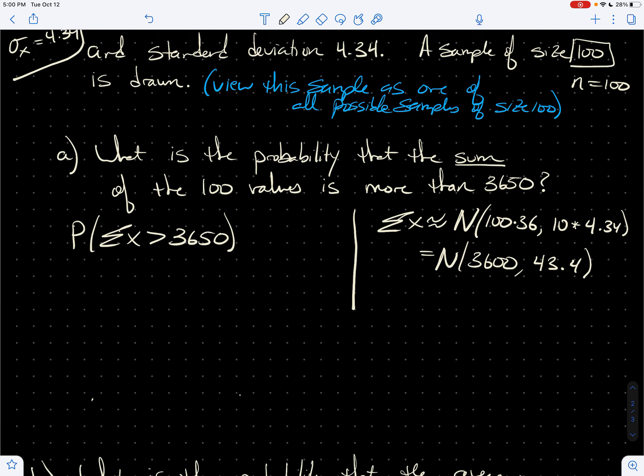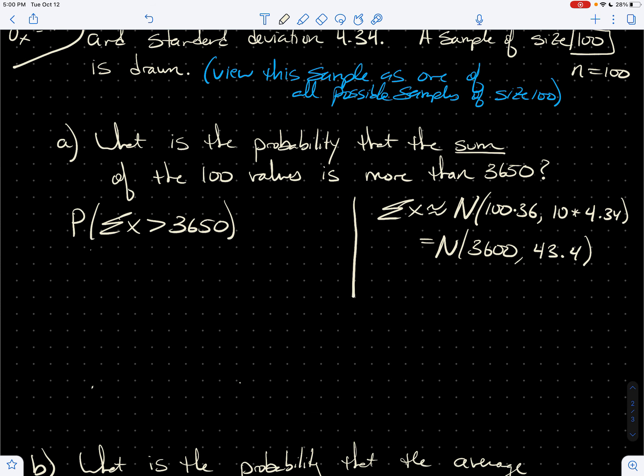And so that actually allows me to standardize this. This is the same thing as the probability that z is greater than 3650 minus 3600 over 43.4. So what is that? That's just 50 over 43.4.